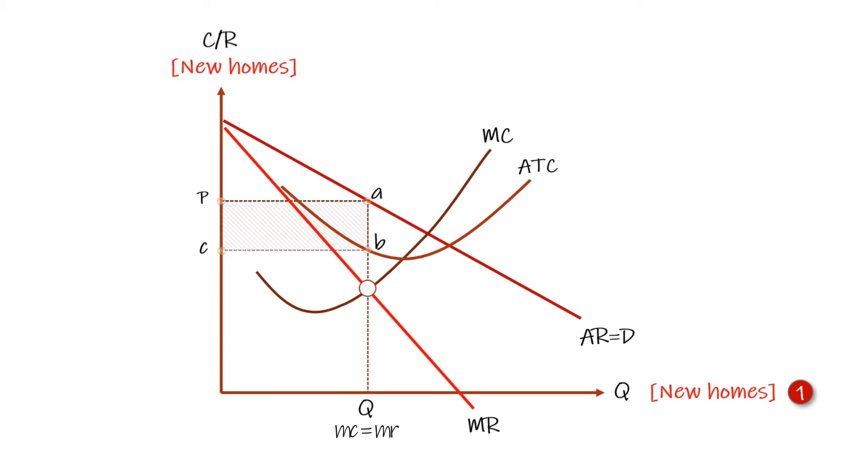So the rectangle of supernormal profits is the area of total revenue minus the area of total costs. This is rectangle P-A-B-C. Now move the correct curve to represent the cost increase.